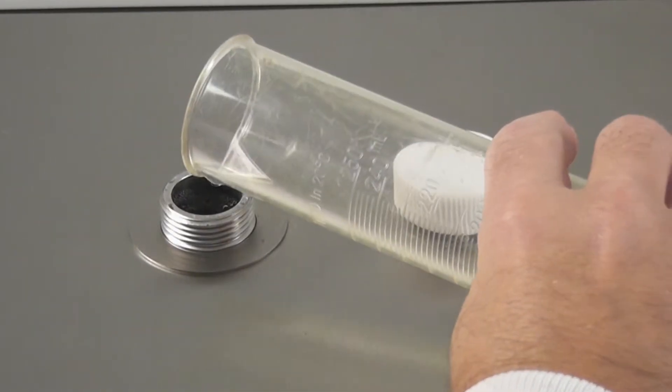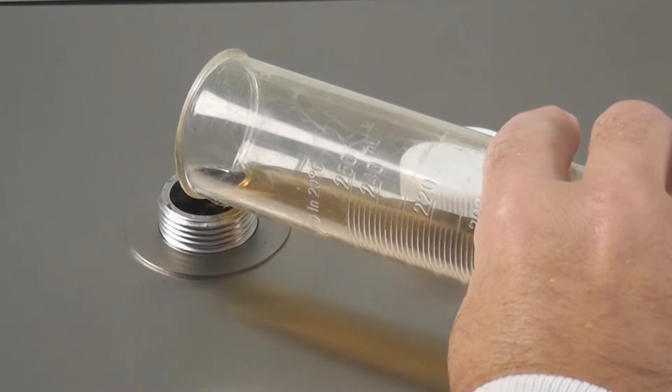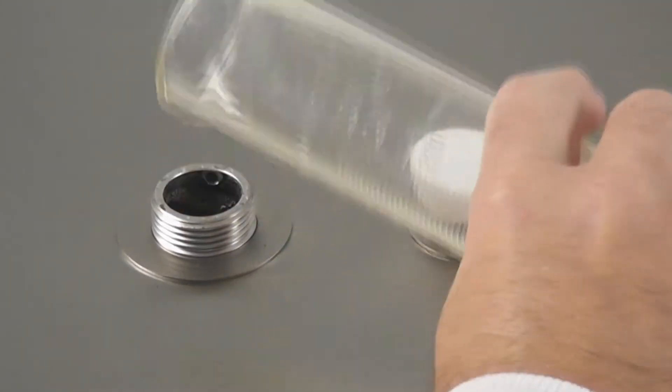If you wish to add thermolabile products or other additives after the sterilization cycle, simply remove the filling cap and pour your materials into the sterilization chamber.